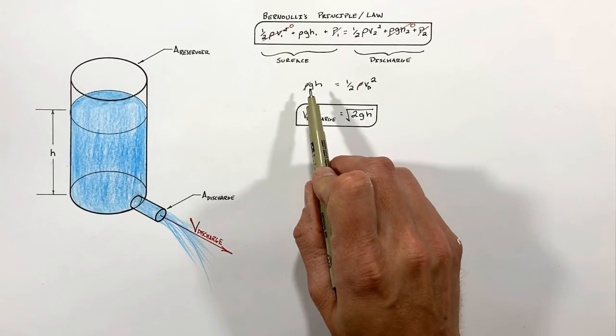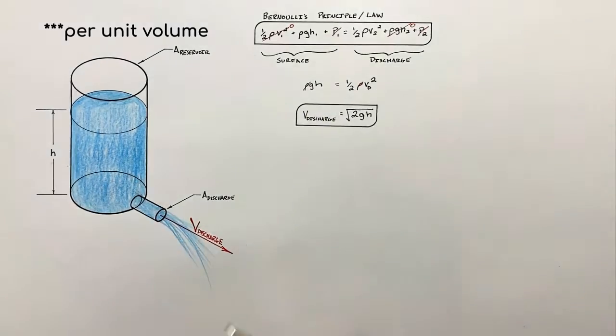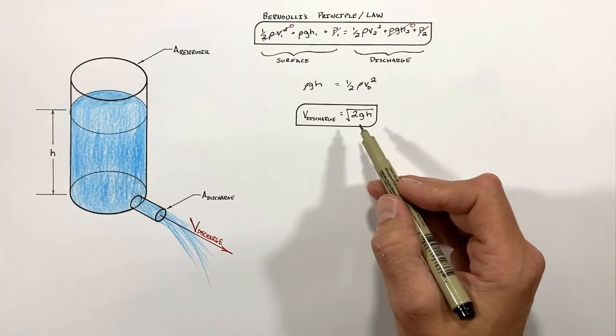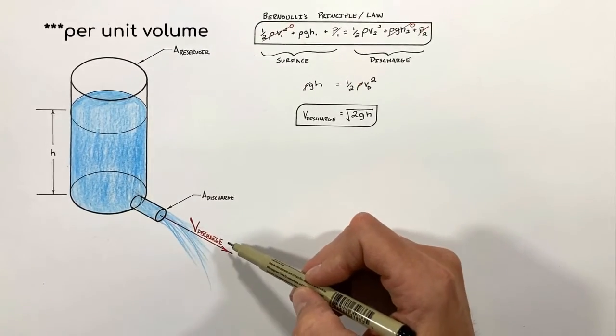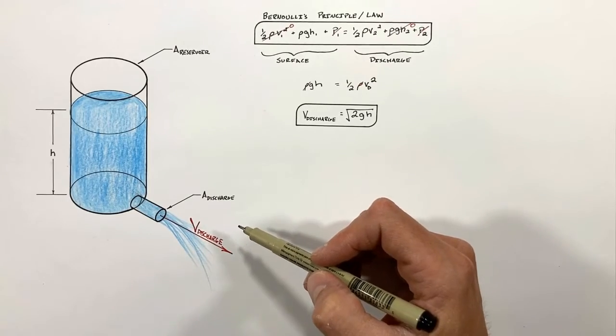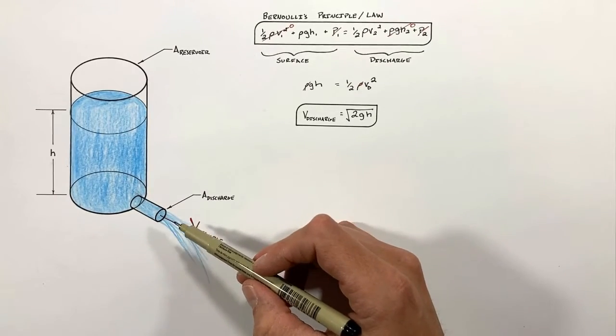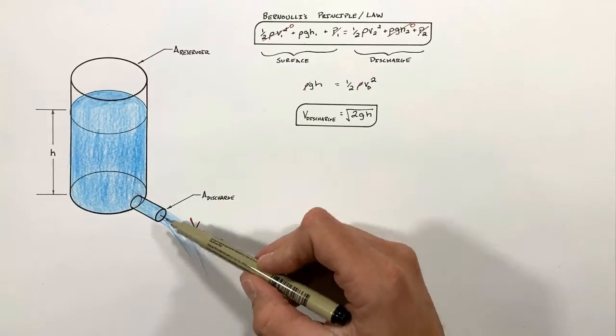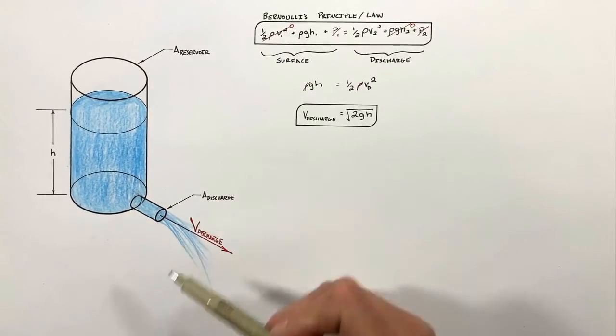And the next thing I want to point out is that since we're ultimately dealing with the conservation of energy, this velocity has no direction. The fluid will come out of the discharge at the same speed regardless of whether the discharge pipe is pointed up, down, or anywhere in between.